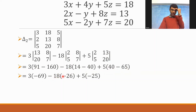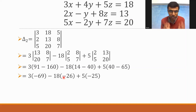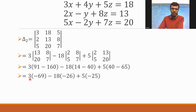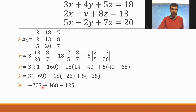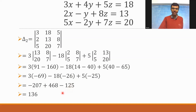Be careful here — there are a lot of minus signs. Out of 14 and 40, 40 is greater and has a minus sign, so that answer is negative. And out of 40 and 65, 65 is greater and has a minus sign, so that is also negative. Simplifying: -207 + 468 - 125 gives 136. Delta 2 = 136.